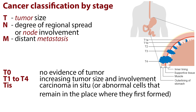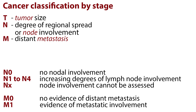Cancers are also classified according to their stage. The most commonly used method is called the TNM staging. T stands for tumor size, N is the degree of regional spread or node involvement, and M stands for distant metastasis. T0 represents no evidence of tumor; T1 to T4 represents increasing tumor size and involvement; and TIS represents carcinoma in situ, or abnormal cells that remain in the place where they first formed. N0 represents no nodal involvement, and N1 to N4 signifies increasing degrees of lymph node involvement. Nx indicates that node involvement cannot be assessed. M0 represents no evidence of distant metastasis, and M1 represents evidence of metastatic involvement.